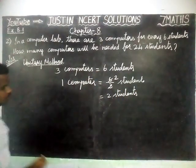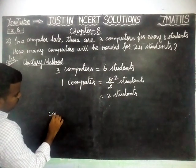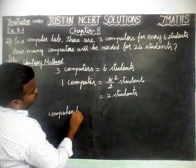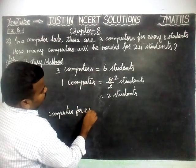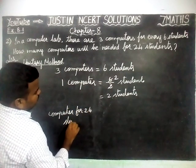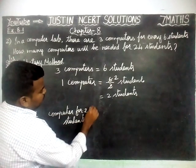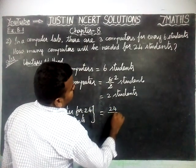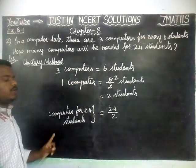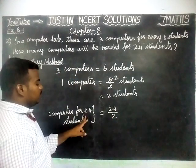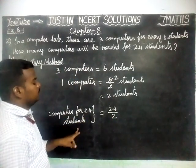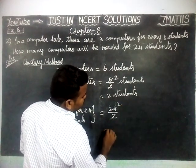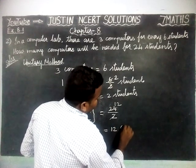Now we are going to find the number of computers for 24 students. Computers for 24 students is equal to 24 divided by 2, because 1 computer is equal to 2 students. 24 divided by 2 equals 12. So, 12 computers.